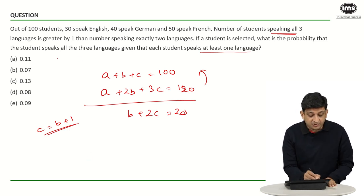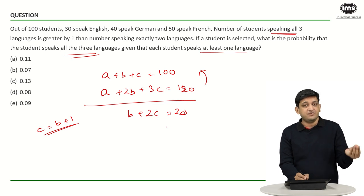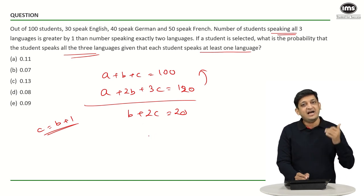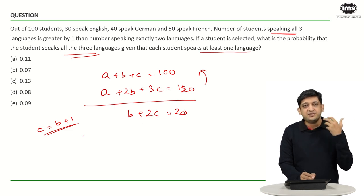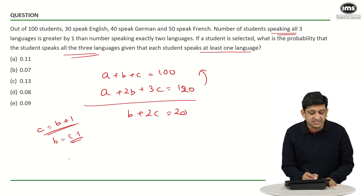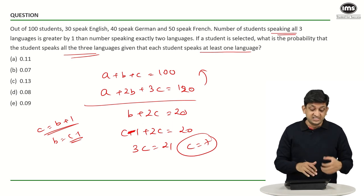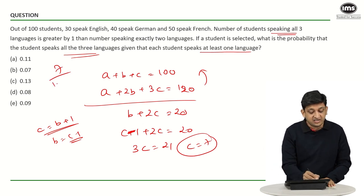We need to find C, the number of students speaking all three languages. Substituting B = C − 1 into B + 2C = 20: (C − 1) + 2C = 20, so 3C = 21, giving C = 7. The probability that a randomly chosen student speaks all three languages is 7 out of 100, which is 0.07.